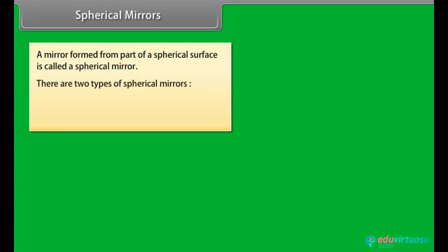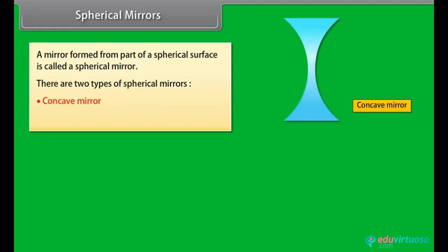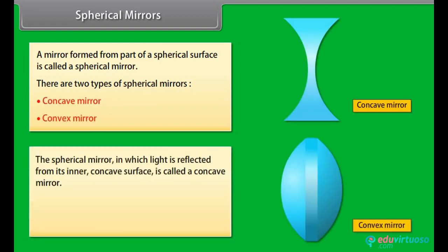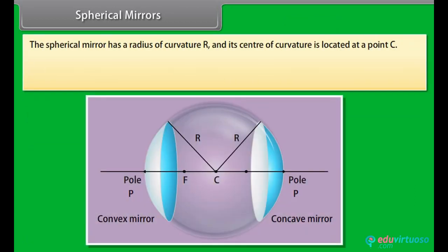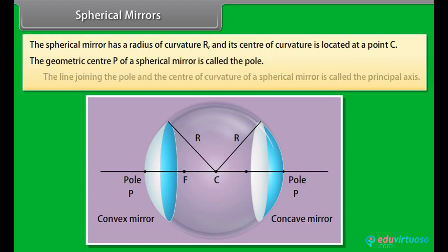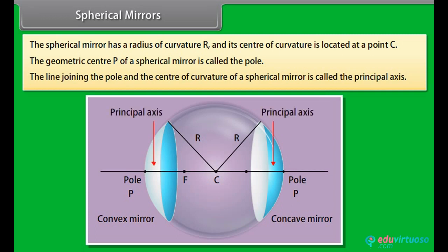There are two types of spherical mirrors: concave and convex. A concave mirror reflects light from its inner concave surface. A convex mirror reflects light from its outer convex surface. The spherical mirror has a radius of curvature R, and its center of curvature is at point C. The geometric center P is called the pole, and the line joining the pole and center of curvature is called the principal axis.